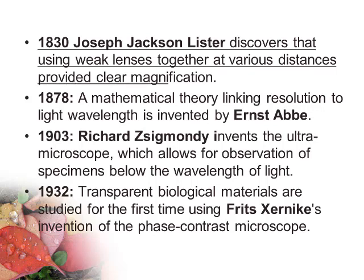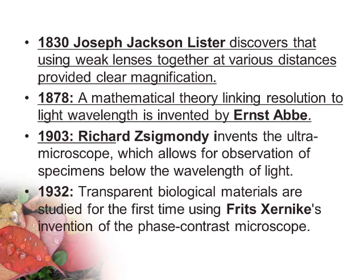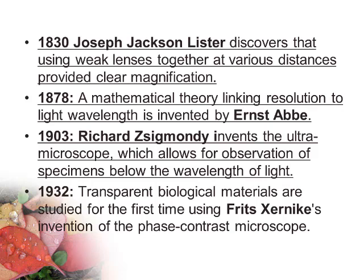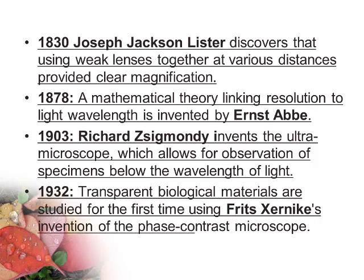In 1830, Joseph Jackson Lister discovered that using weak lenses together at various distances provided clear magnification. In 1877–78, a mathematical theory linking resolution to light wavelength was developed by Ernst Abbe. In 1903, Richard Zsygmondy invented the ultra-microscope, which allows observation of specimens below the wavelength of light.